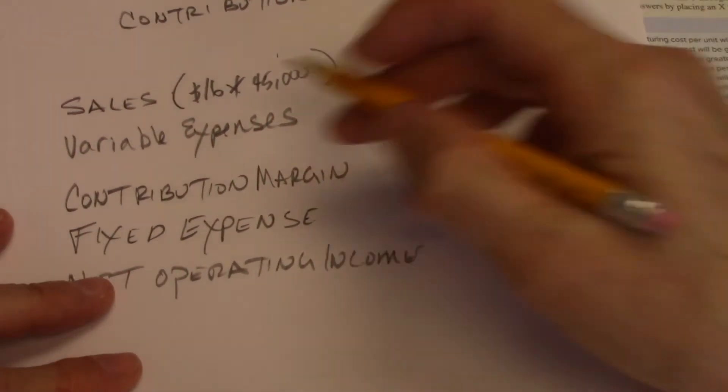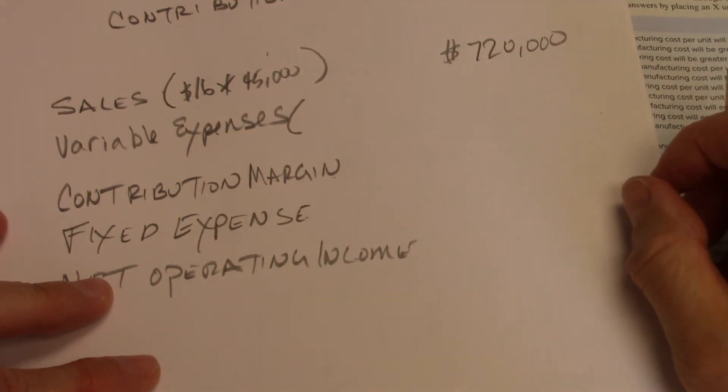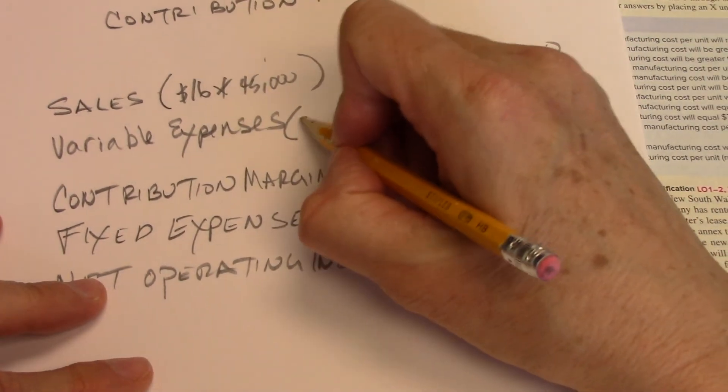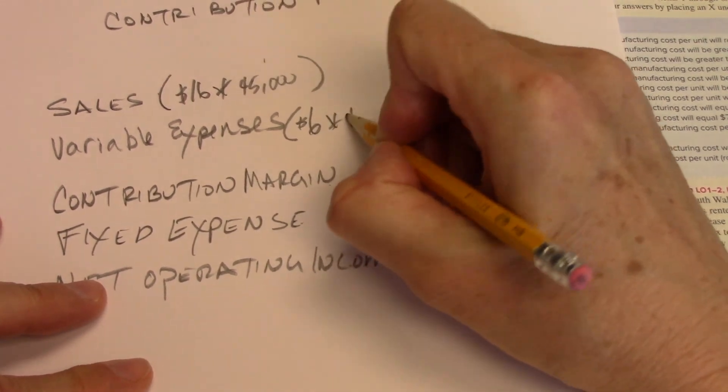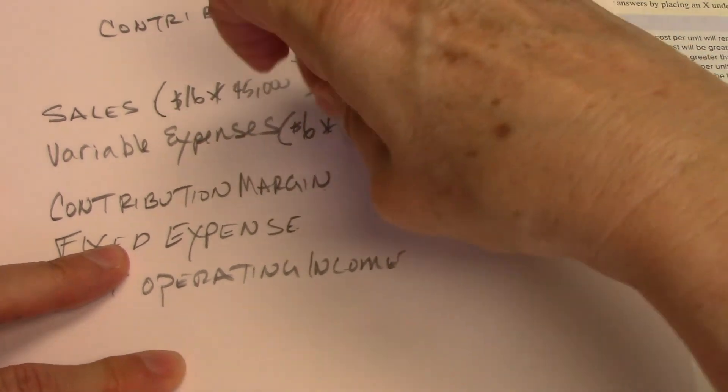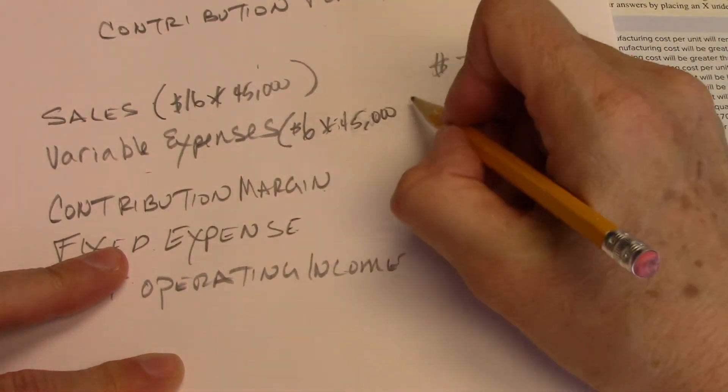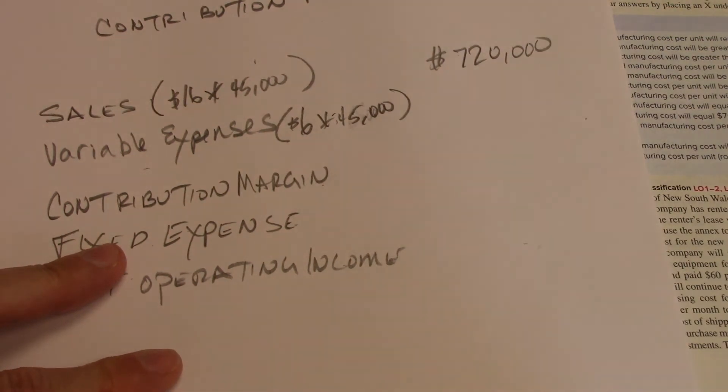Next, variable expenses. So we know that the variable expenses are $6 per unit. So 6 times 45, that's a 45 in case you couldn't tell. So 6 times 45 is $270,000.